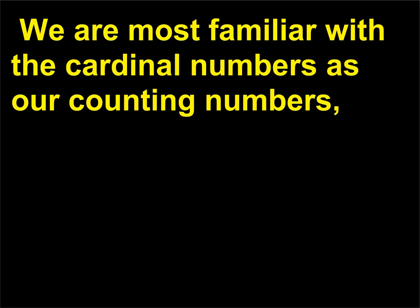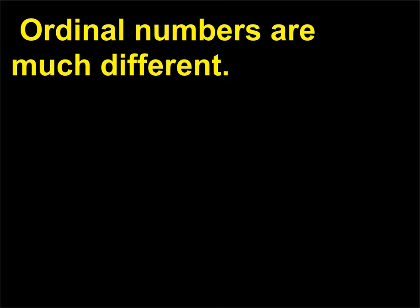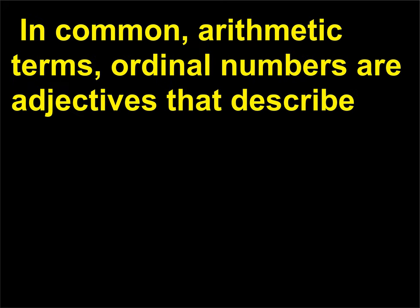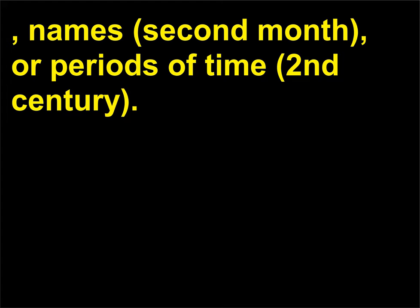We are most familiar with the cardinal numbers as our counting numbers, or the Hindu-Arabic numeration system: 1, 2, 3, and so on. Ordinal numbers are much different. In common arithmetic terms, ordinal numbers are adjectives that describe the numerical position of an object, such as 1st, 2nd, 3rd, and so on. They are used to show the order of succession for objects (2nd chair), names (2nd month), or periods of time (2nd century).